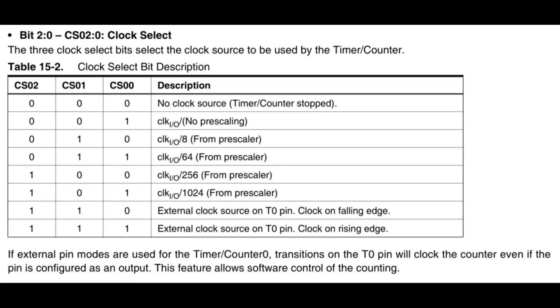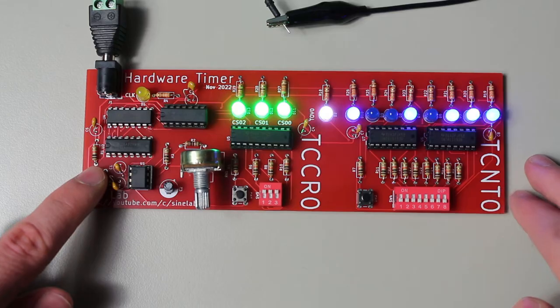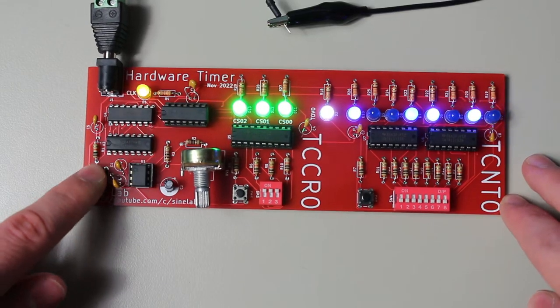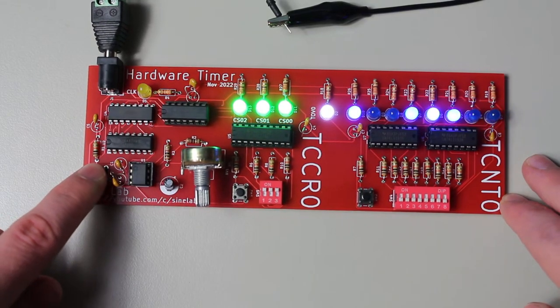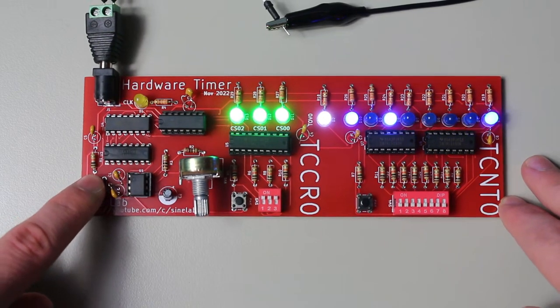You will also notice the other two settings at the bottom. They both have to do with another external clock source on the T0 pin. They both do the same thing, but activate the clock on either the falling or rising edges. We can see it on the board when I set the TCCR register and then press the T0 button. One press equals one clock cycle.